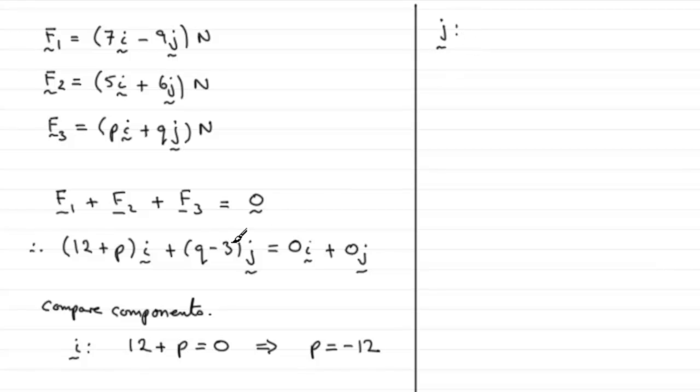If we've got Q minus 3 must equal the 0 here, so Q minus 3 equals 0. If we add 3 to both sides we therefore get that Q equals 3. So that's essentially it.